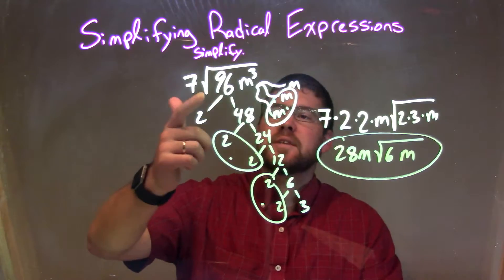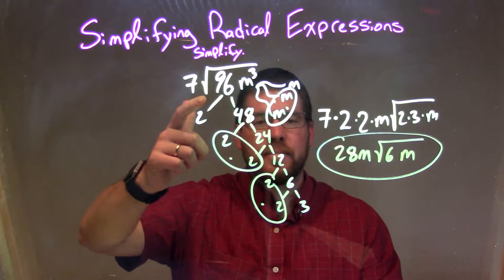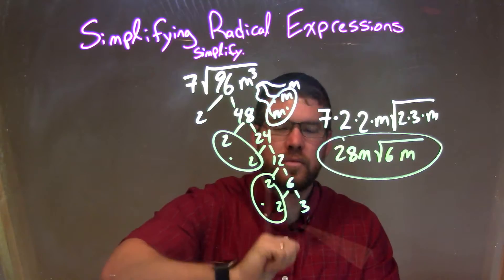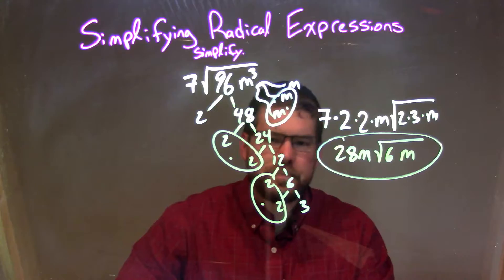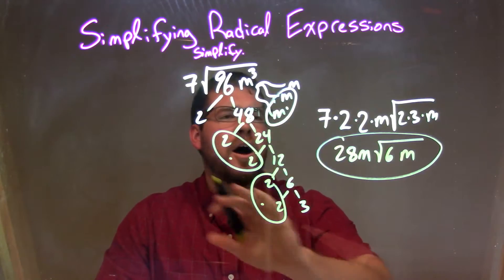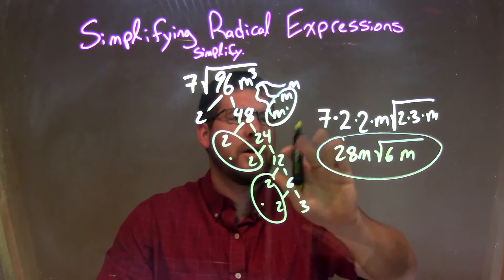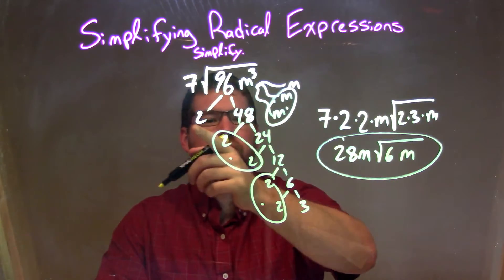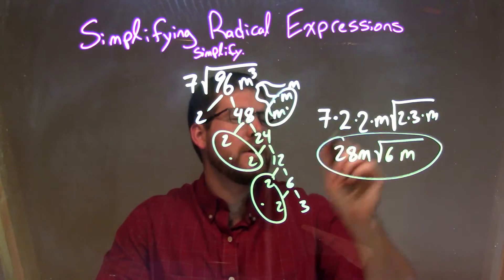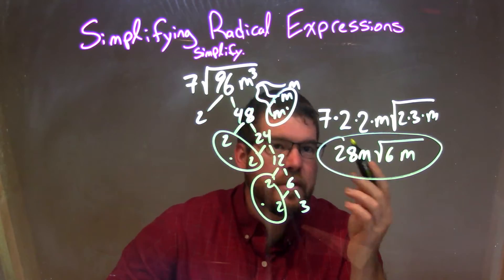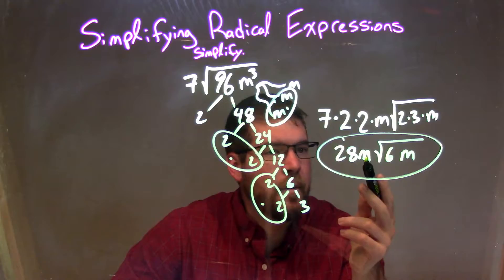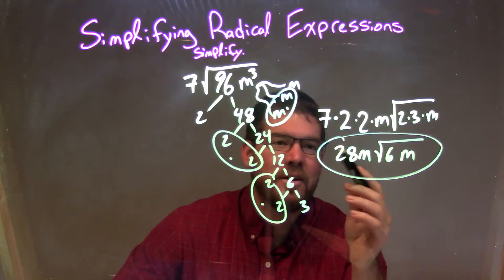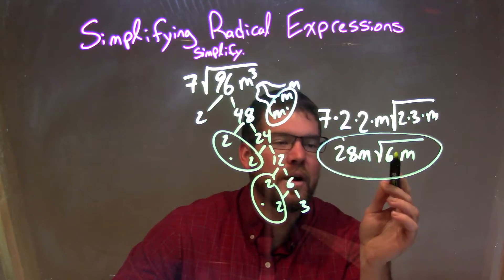So let's recap. We did 7 times the square root of 96m to the third. Broke that down using prime factorization and got 96 to be 2 times 2 times 2 times 2 times 2 times 3. And m to the third is just 3 m's multiplied. Circle the pairs, brought them out — kept the 7 on the outside of the square root, so I had 7 times 2 times 2 times m. Inside the square root were all the lone factors: 2 times 3 times m. Then we simplified: 7 times 2 times 2 is 28, m was by itself, and 2 times 3 was 6, giving a final answer of 28m times the square root of 6m.